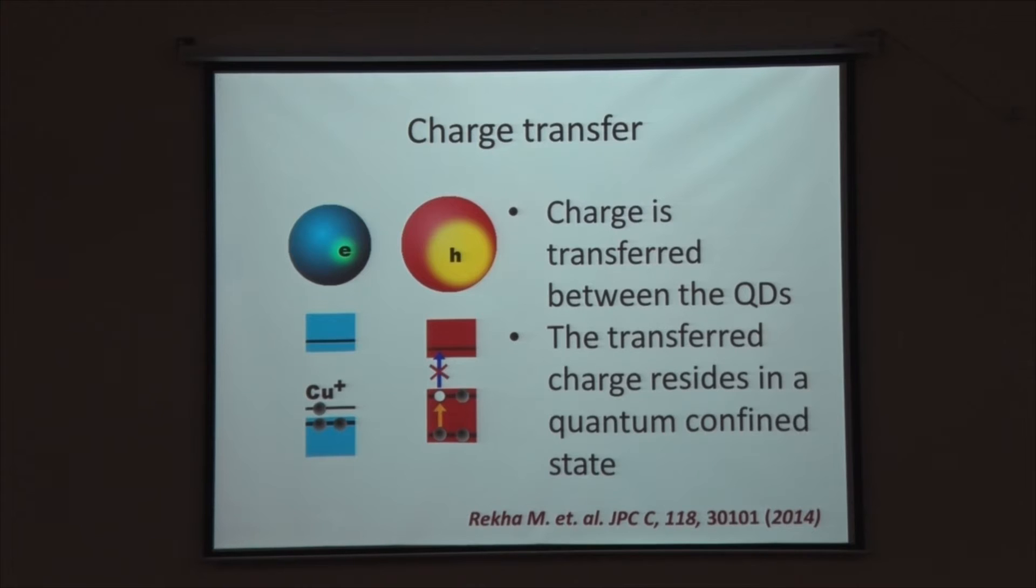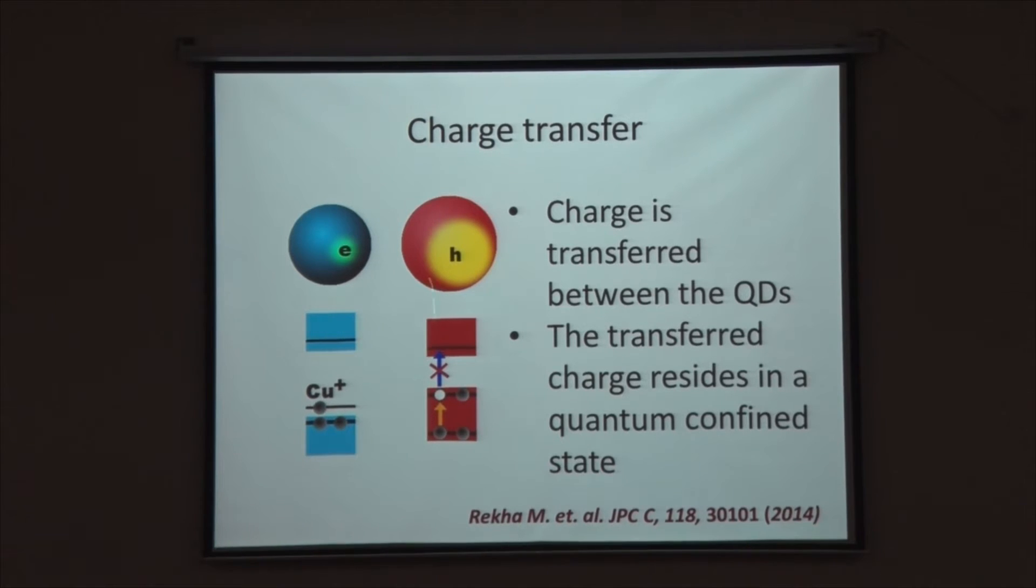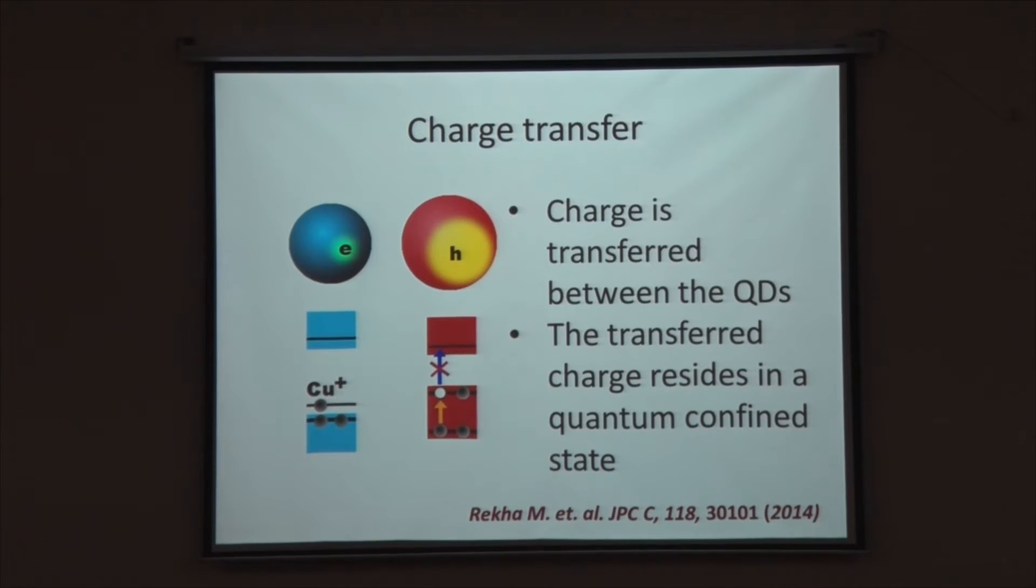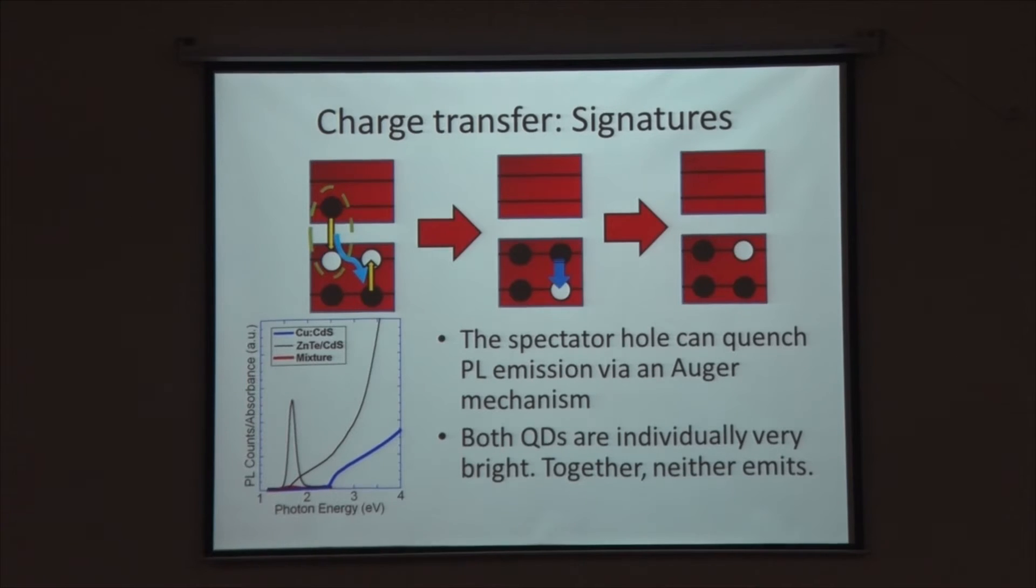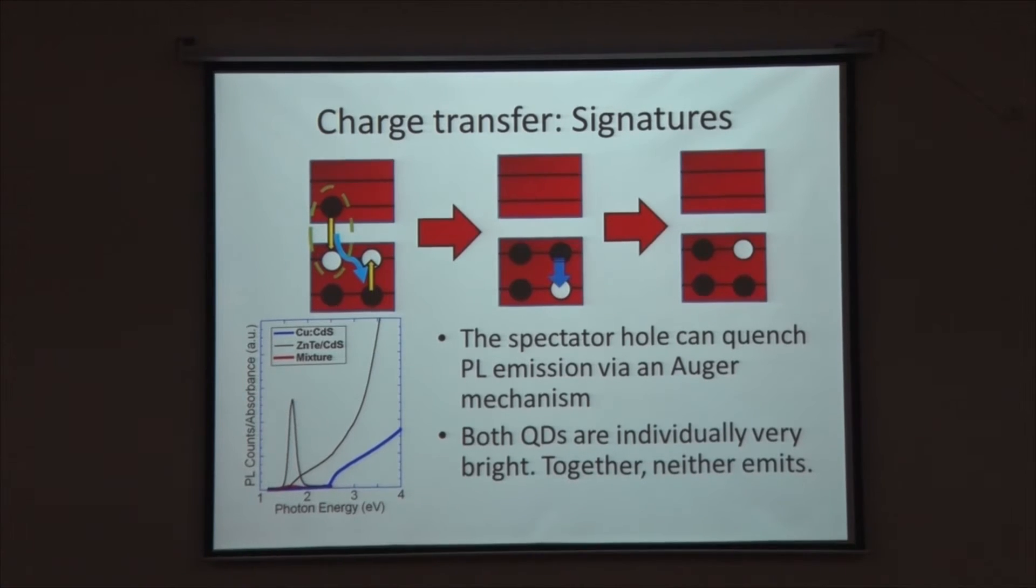Now we have two charges, a negative and a positive charge occurring on the quantum dots. But this is not an excited state charge transfer. I must emphasize this is a ground state effect. In the ground state we have two charged quantum dots. The interesting thing is these charges are now residing on a new type of state, on the 1s, 1p states of these quantum dots which sort of resemble hydrogenic orbitals.